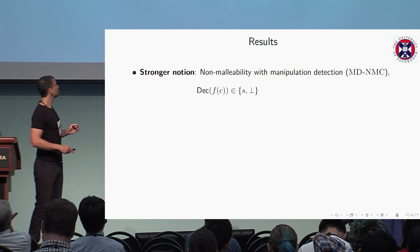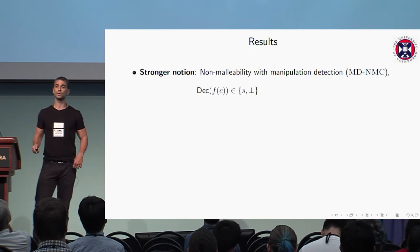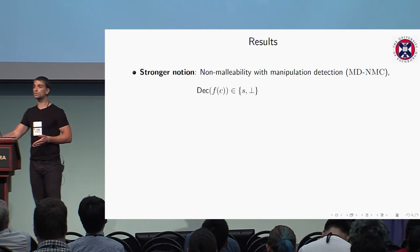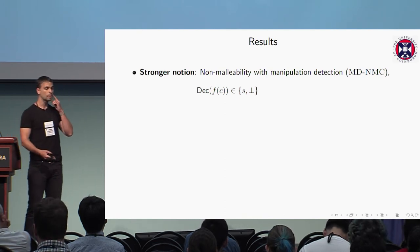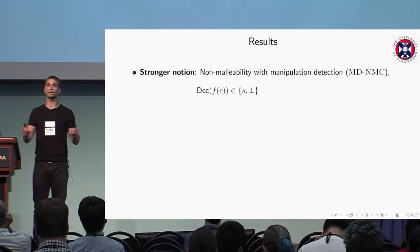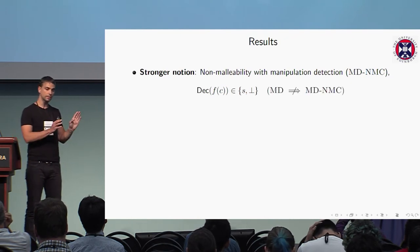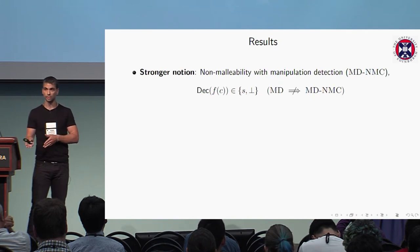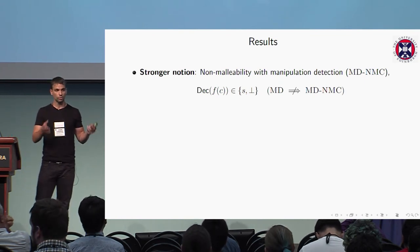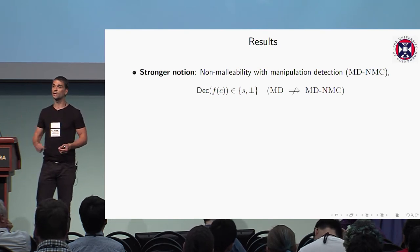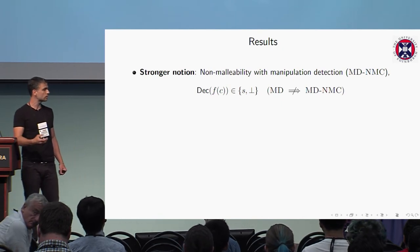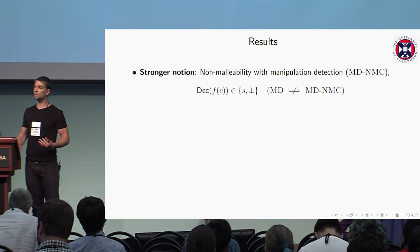Indeed, we achieve a stronger notion which we call non-malleable codes with manipulation detection, where manipulation detection is on top of non-malleability. We have simulation-based security and also achieve manipulation detection, which guarantees that the modified codeword will either decode to the original message or decode to the invalid symbol bottom. Manipulation detection does not imply non-malleable codes with manipulation detection, but the other way around holds. This is an important property: if you have manipulation detection, you can use the primitive for secure communication — the receiver needs to know he received the correct message, or detect that someone tampered with the communication.